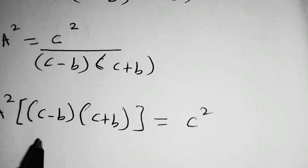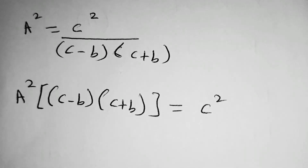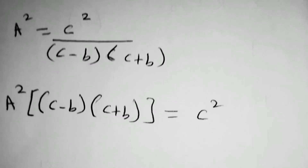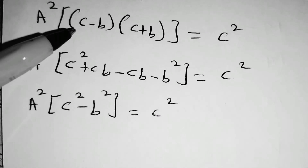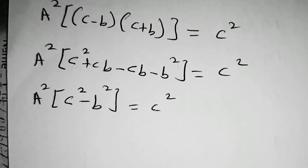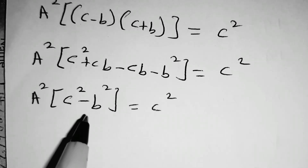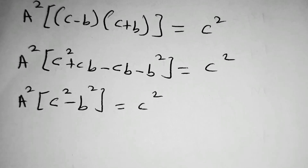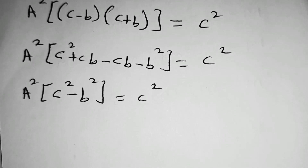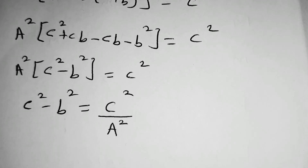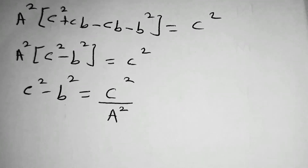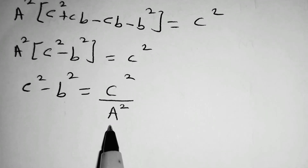Then we expand this part. The objective is to obtain B. Expanding C minus B bracket C plus B, this is the difference of two squares, which gives C squared minus B squared. Then we divide both sides by A squared, so we are left with C squared minus B squared is equal to C squared divided by A squared.